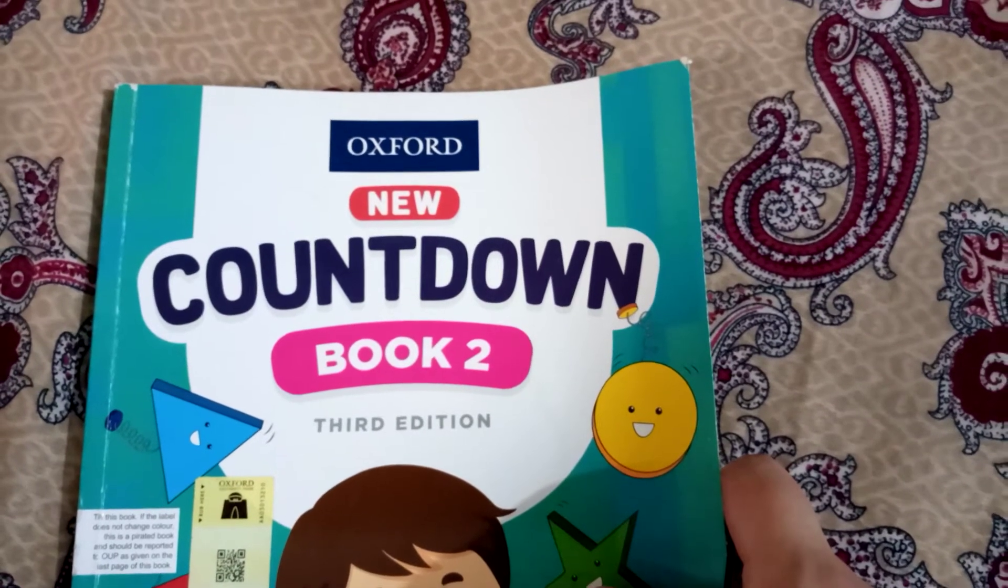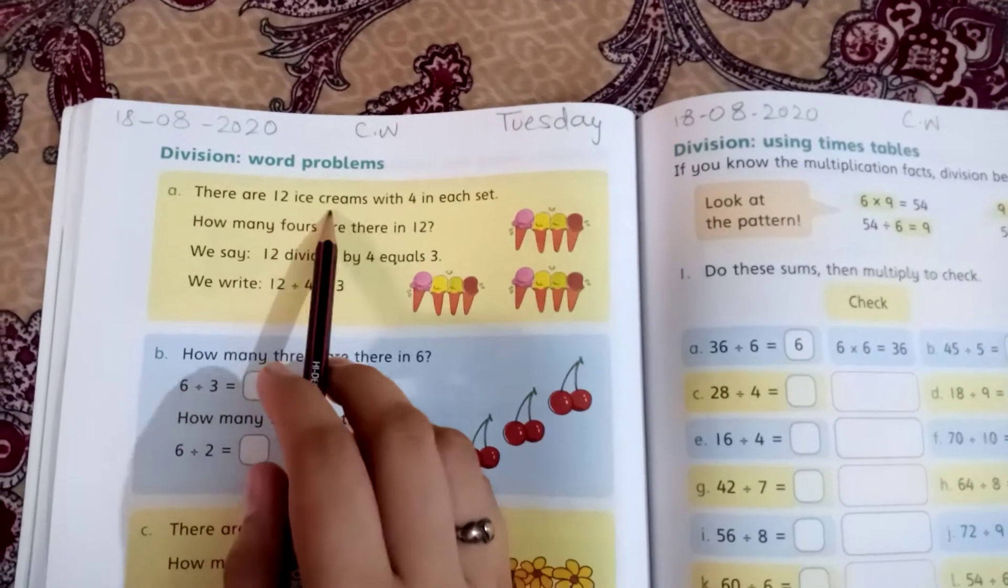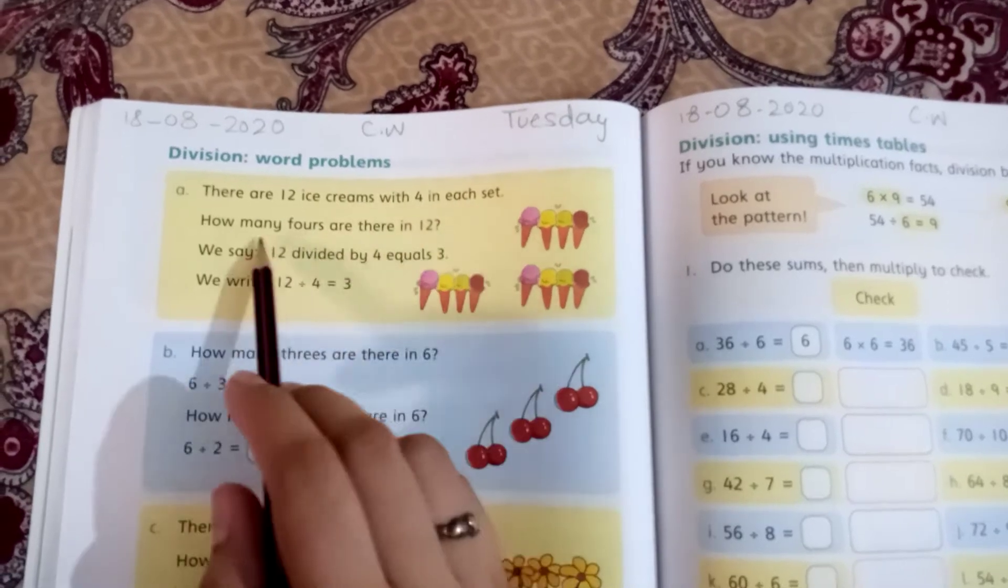Assalamualaikum students. Today we are going to start the work on Countdown Book 2. Let's take out the new page. We will start division word problems. There are 12 ice creams with 4 in each set.